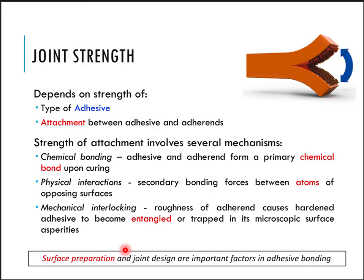The joint strength of adhesive bonding depends on the type of adhesive and the attachment between adhesive and adherends. Attachment refers to the chemical bonding, physical interaction, or mechanical interlocking that occurs between them. Chemical bonding is primarily due to the nature of the adhesive. Physical interactions involve secondary van der Waals forces between atoms. Mechanical interlocking occurs due to surface roughness — a rough surface helps entangle the adhesive with microscopic surface asperities, enhancing joint strength. Surface preparation and joint design are therefore very important.